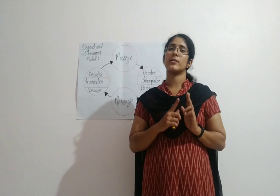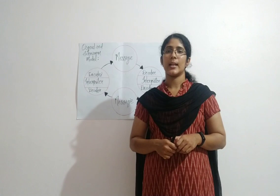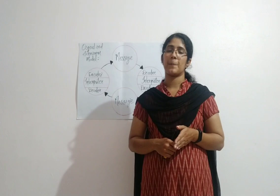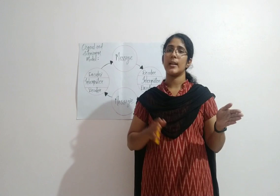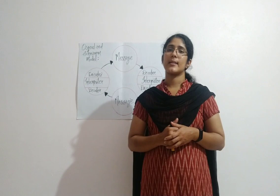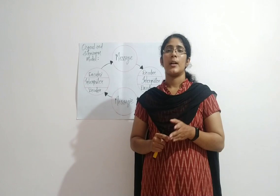First we will study the Osgood and Schramm model of communication. It states that communication takes place in a two-way process which has a sender on one side and the receiver on the other side. Charles Osgood says that communication takes place in a circular way rather than in a linear way, and it has mainly two participants — one who sends a message is the sender, and one who receives the message is the receiver.